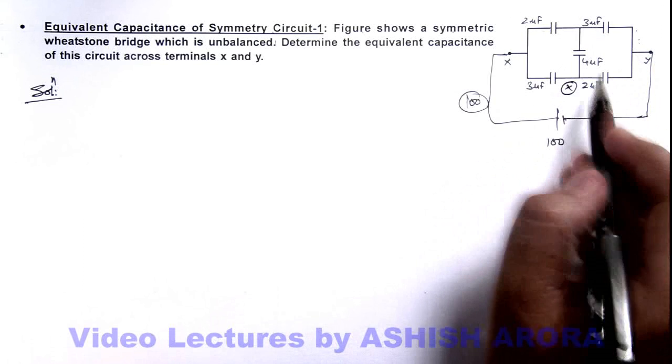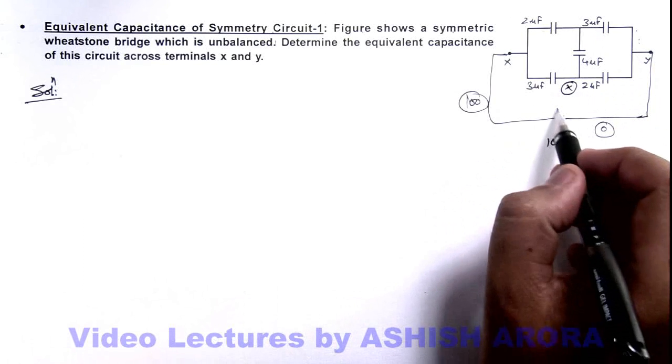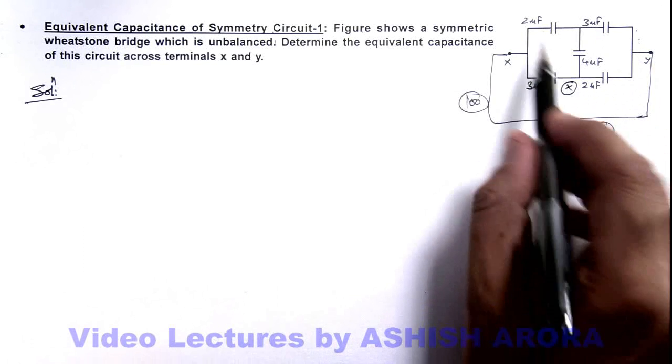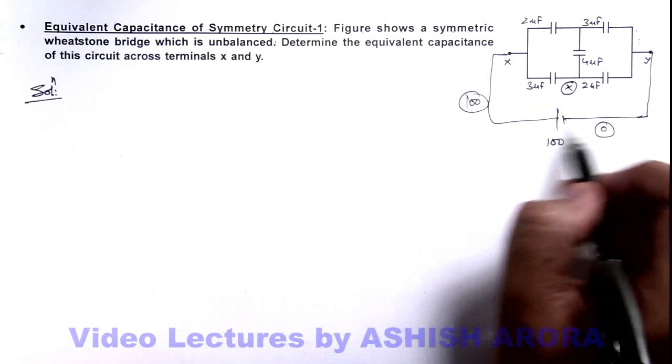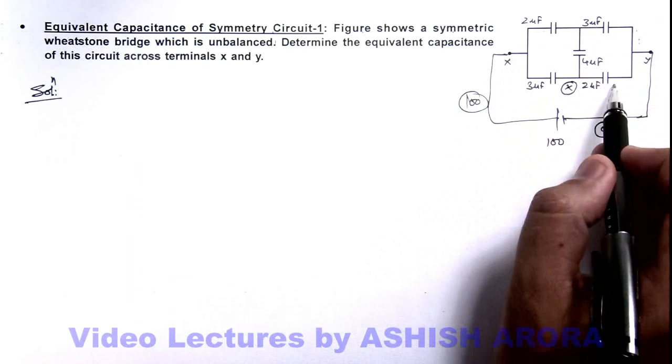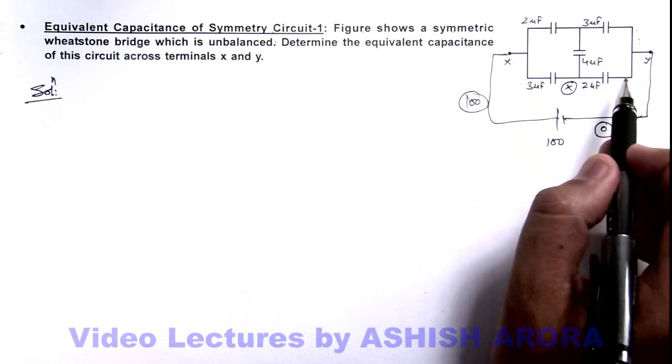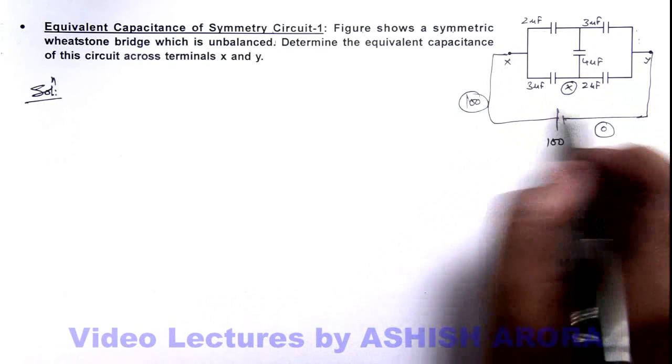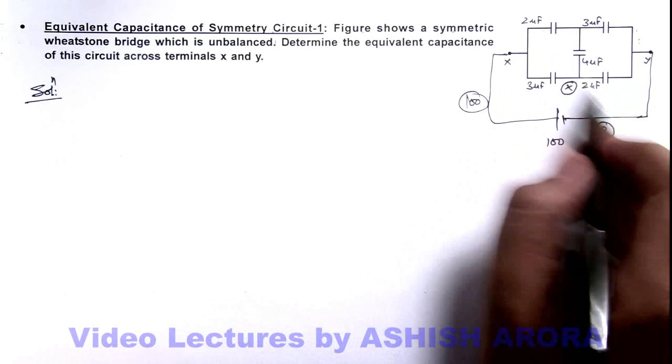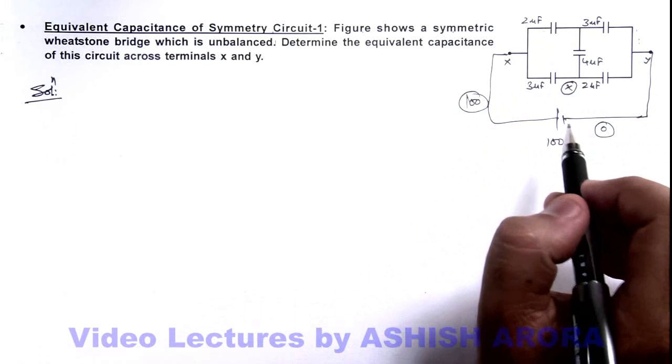Then by symmetry we can see as charges are pulled by the battery from 2 and 3 microfarad capacitors and these are pushed on 2 and 3 microfarad capacitors, so by symmetry we can say the charges on these 2 and these 3 microfarad capacitors will remain same.